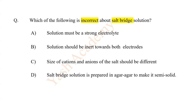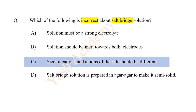Which of the following is incorrect about salt-bridge solution? The answer is C: the size of cations and anions of the salt should be different.